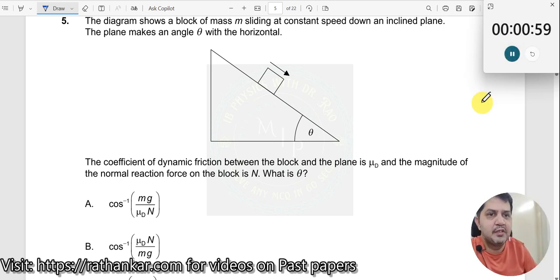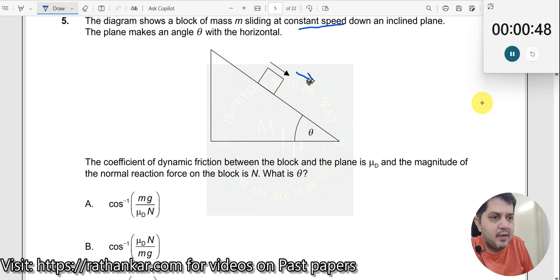Question number 5. The diagram shows a block of mass m sliding at constant speed. When does a block slide with a constant speed along an inclined plane? It will happen only when the downward force is equal to the upward force.